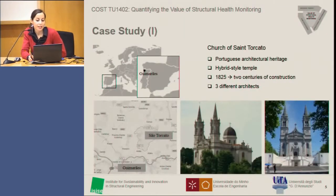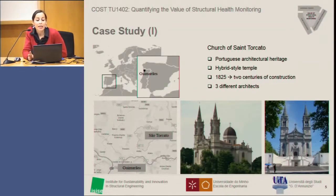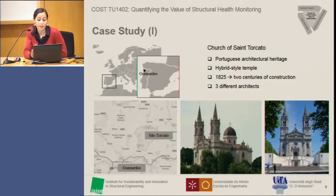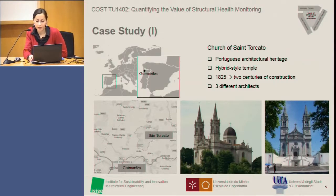The case study structure I analyzed is the Church of Santo Catão, located in the homonymous village close to the more famous city of Guimarães in Portugal. It's a historical church whose construction started in 1825 and stretched over two centuries, involving the work of three different architects. It's a hybrid-style temple — a mix of Gothic, Classical, and Renaissance styles.